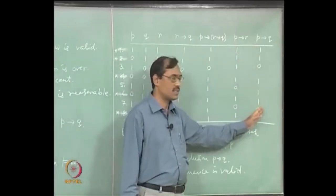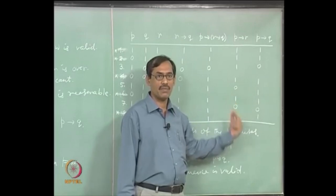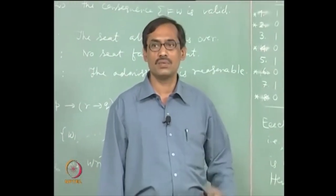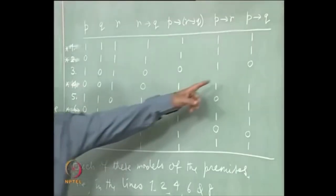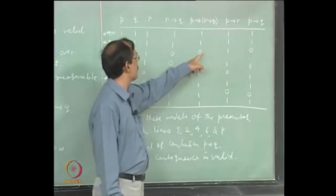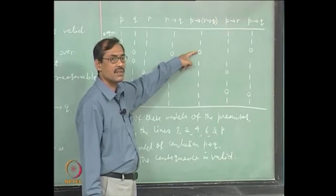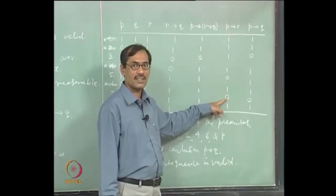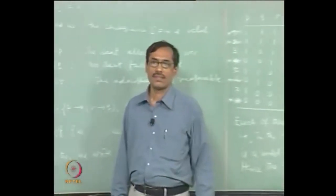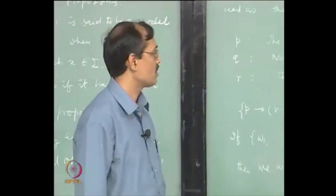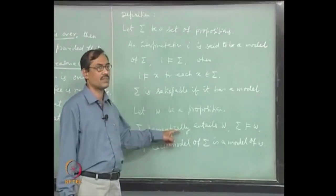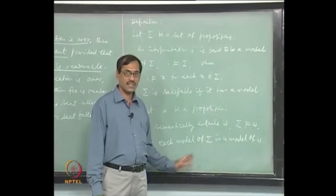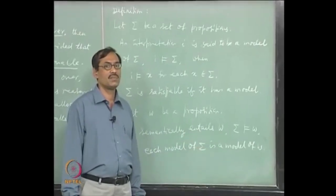The procedure says: look for zeros in the column for p implies q, and then verify whether in each of those rows, at least one of the premises is also evaluated to be 0. Starting from the third line, p implies q is 0 and one of the premises (p implies r implies q) is 0. In the sixth line, p implies q is 0 and p implies r is evaluated 0. Therefore, sigma entails w. The alternate definition: if I falsifies w, then I falsifies at least one of the premises in sigma.